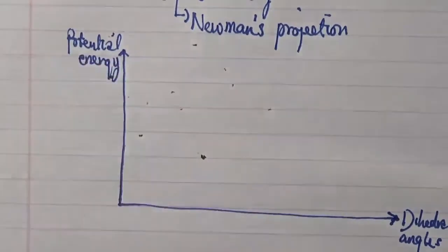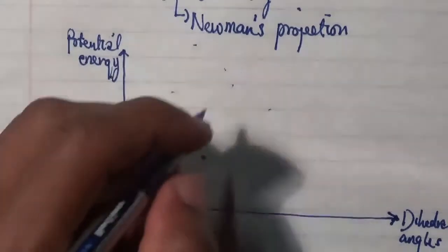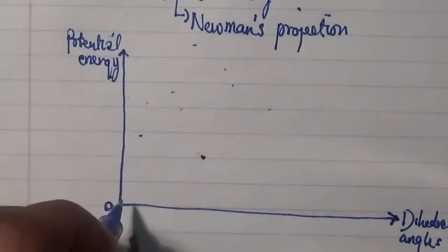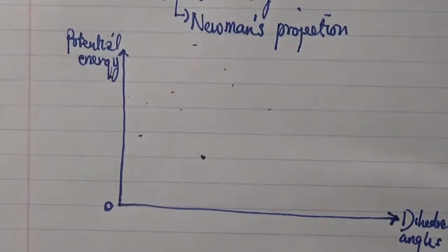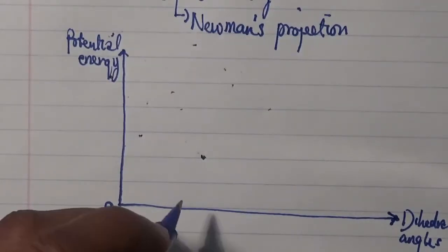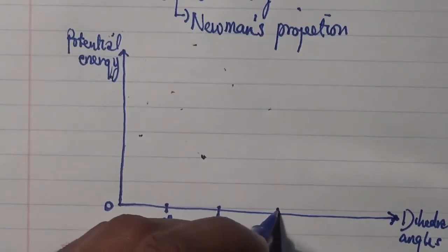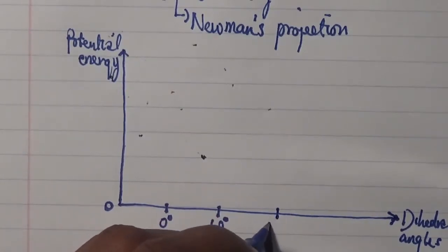In here, I'm going to assume this particular point here to be 0 potential energy and all the way up here is positive. On the x-axis, I'm going to start by making this particular region here 0 degrees and move every 60 degrees all the way to 180 degrees.